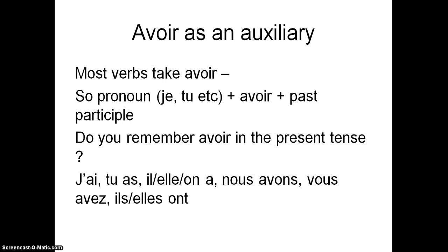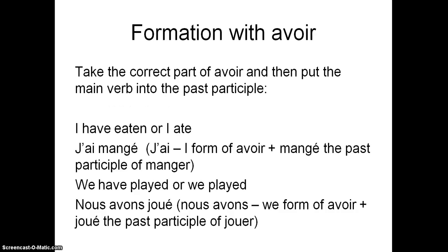So it goes j'ai, tu as, il, elle, on, a, nous avons, vous avez, ils, elles, ont. So I, you, he, she, it, we, you plural, and they. So we need all those bits first if we can use avoir as an auxiliary. And then we just add a past participle on the end of it. So we take the correct part of avoir as we just looked at, then we put the past participle.